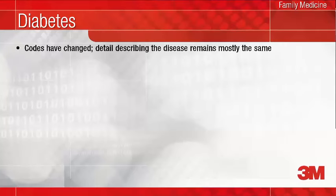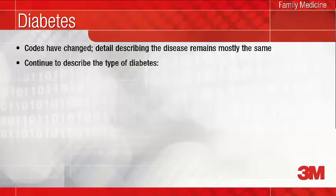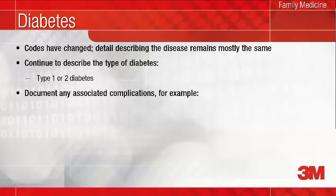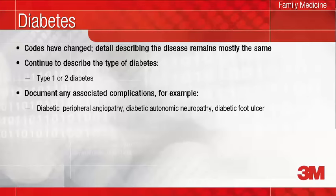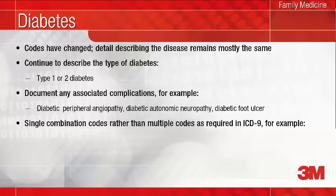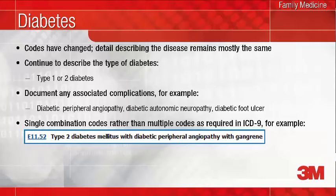The look and feel for codes describing diabetes has changed, but the level of detail describing the disease remains mostly the same. Therefore, your documentation doesn't need to change as long as you are currently documenting the type of diabetes as type 1 and type 2 and any associated complications. For example, diabetic peripheral angiopathy, diabetic autonomic neuropathy, or diabetic foot ulcer. The good news is that ICD-10 uses single combination codes to describe the disease. For example, the diagnosis of type 2 diabetes with diabetic peripheral angiopathy with gangrene required three codes in ICD-9, but in ICD-10, one combination code reports all of these.